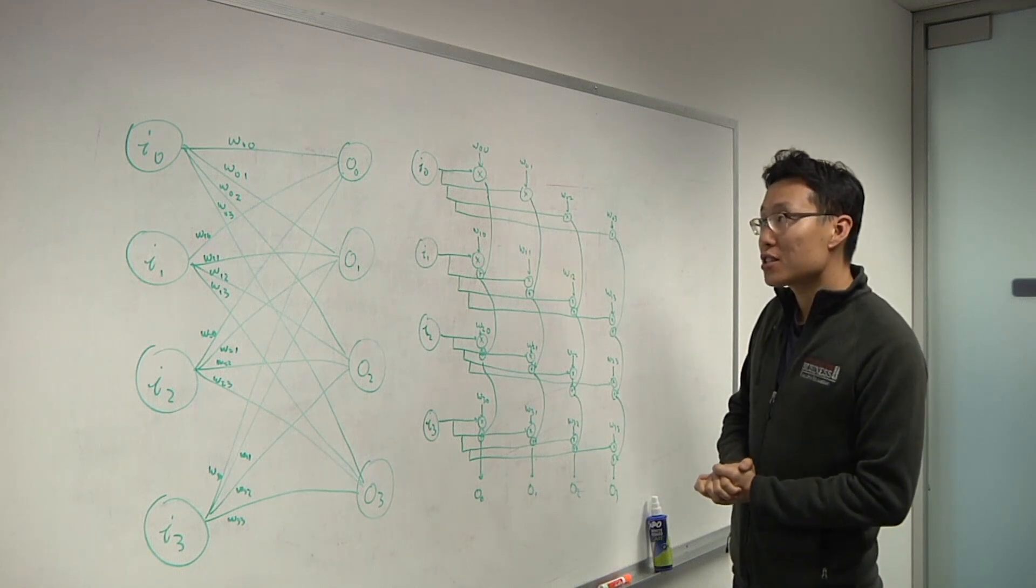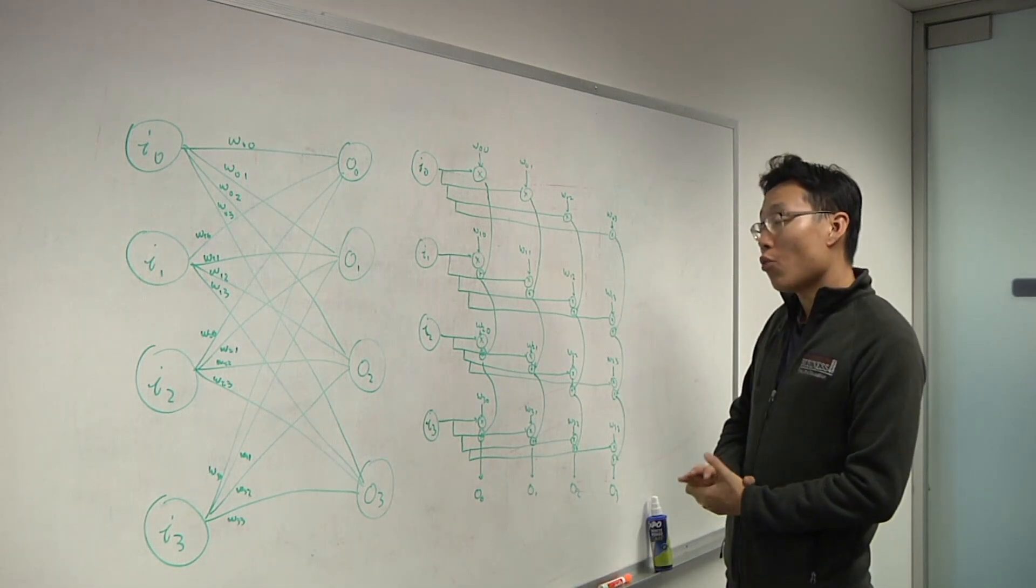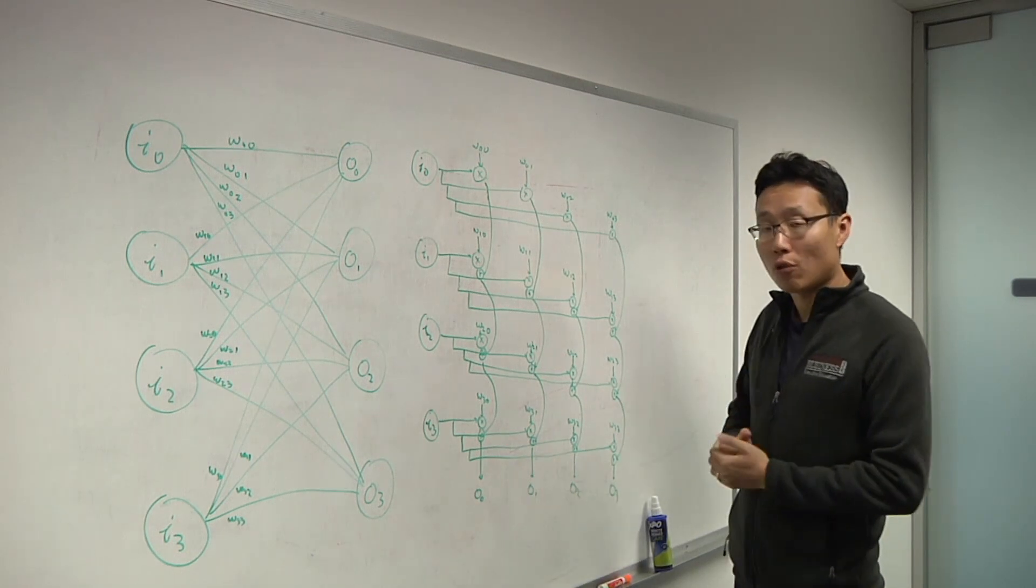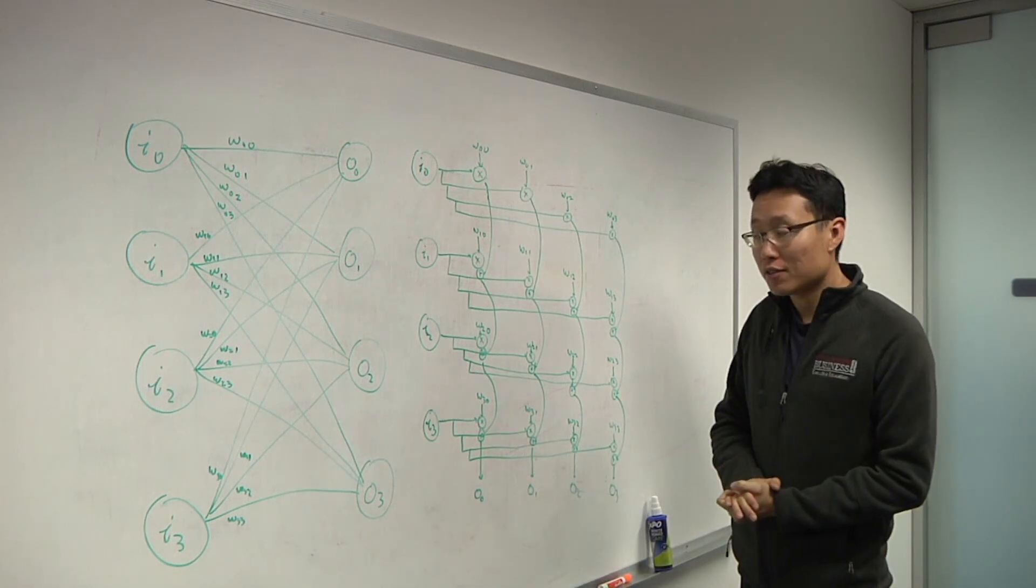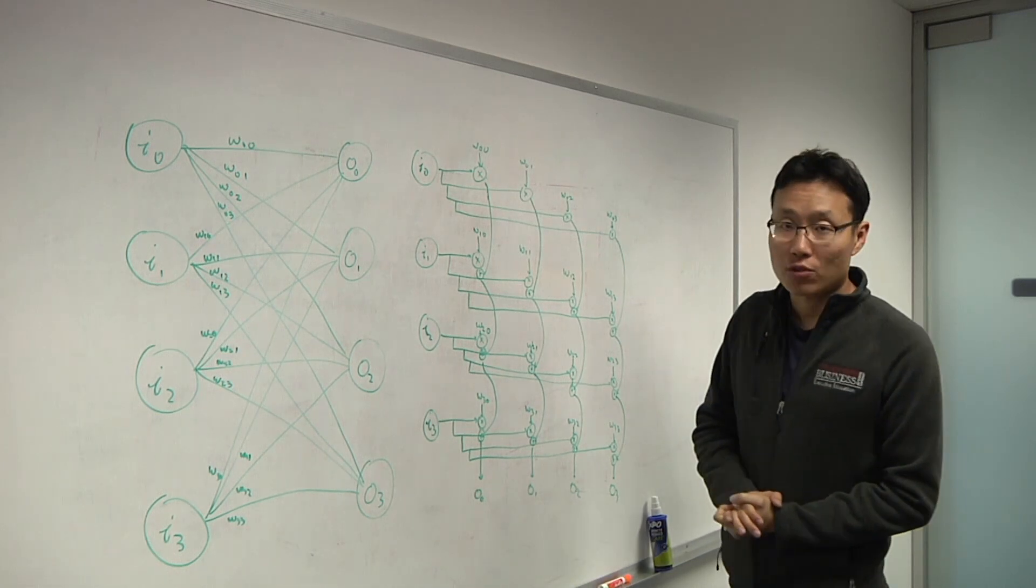So really, it's not just about how many multiply accumulates we have in the hardware, but also the percentage of time while they're actually doing useful work. And that percentage of time is what we call MAC utilization. That's a very important metric we have to consider.